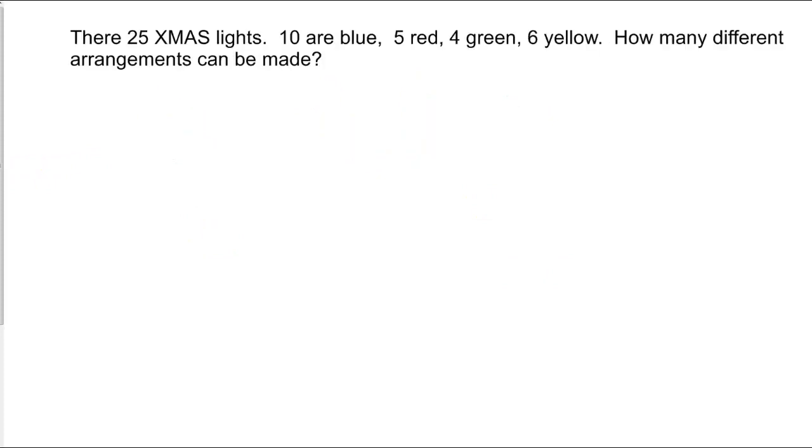So you've got 25 Christmas lights. 10 are blue, 5 are red, 4 are green, and 6 are yellow. How many different arrangements of those 25 lights can you have? Well, we're taking all 25 and arranging those. We've got a full slew of repeats: 10 blues, 5 reds, 4 greens, 6 yellows. This can all be done on a calculator. And the answer in this case is rather large. We get about 2.06 times 10 to the 12th power.